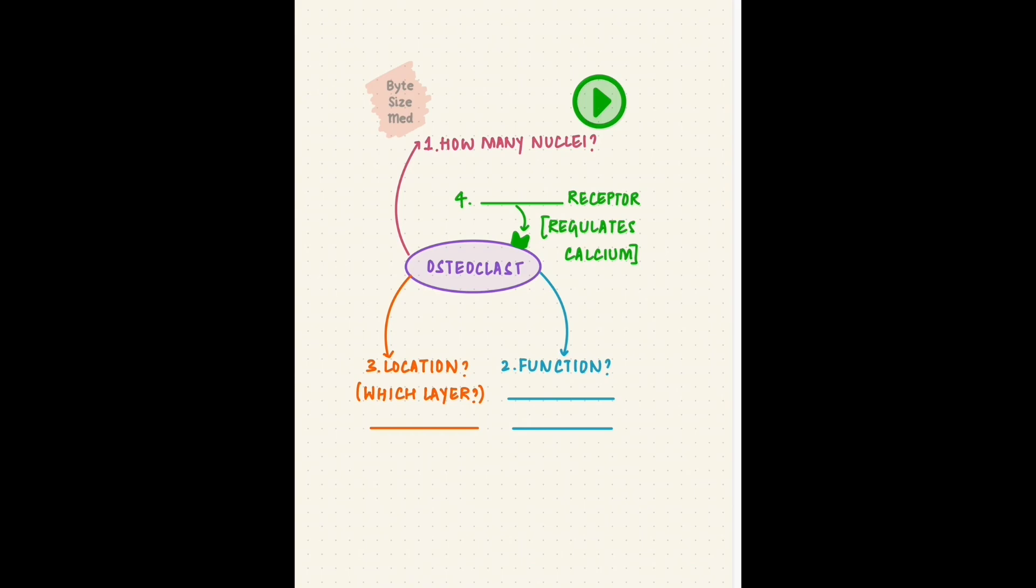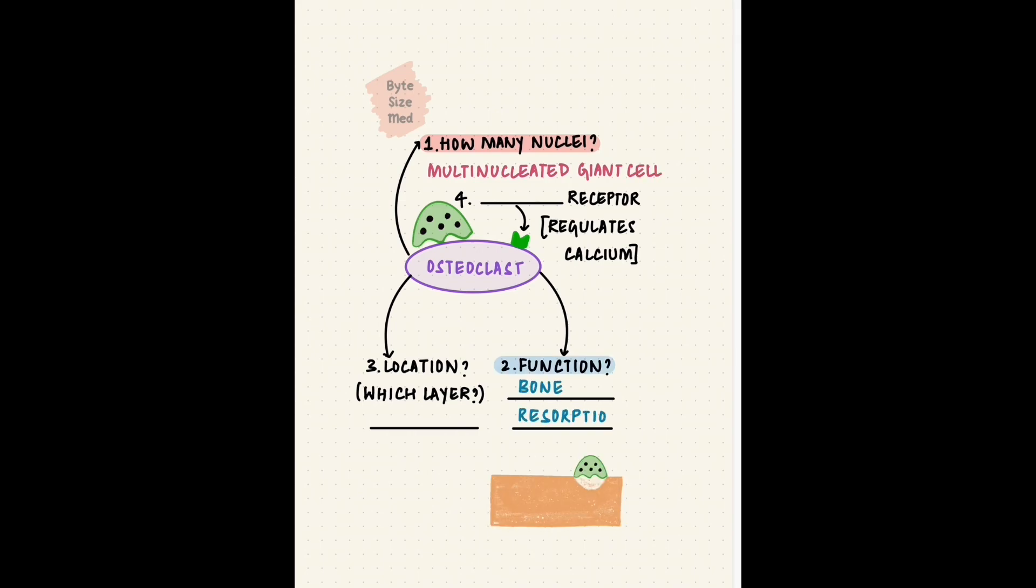Time's up. The osteoclast is a multinucleated giant cell, a physiological giant cell. It digests bone - its function is bone resorption. It's located along with the osteoblasts and osteoprogenitor cells in the periosteum and endosteum layers of bone. It has a receptor for calcitonin, which keeps calcium in bones. It's tempting to say PTH, but PTH receptors are on the osteoblasts, not the osteoclasts.